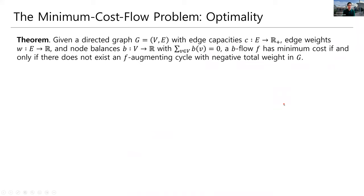Here's the main theorem. So in max flow, we had a theorem that said a flow is maximum if and only if there are no f-augmenting paths. This is exactly the same kind of theorem. A b-flow has minimum cost if and only if there does not exist an f-augmenting cycle with negative total weight. Okay, so negative total weight is the important piece of this. It's not just any f-augmenting cycle that will give us a lower cost b-flow. It's only those with negative total weight.